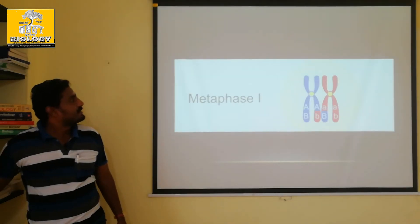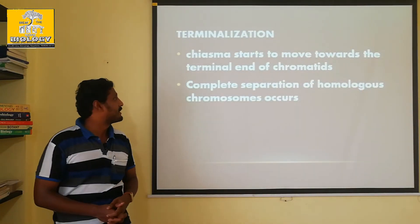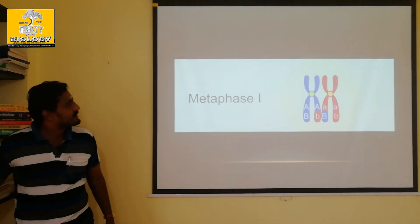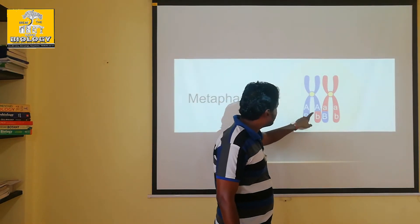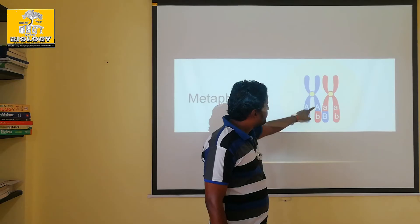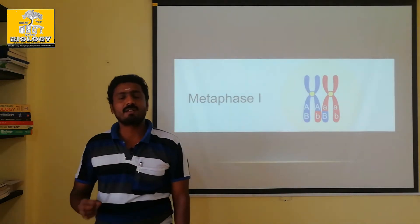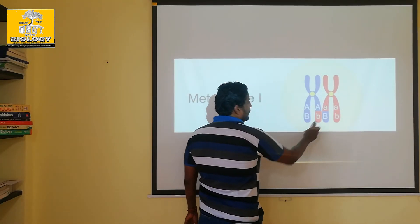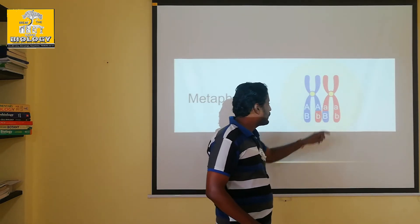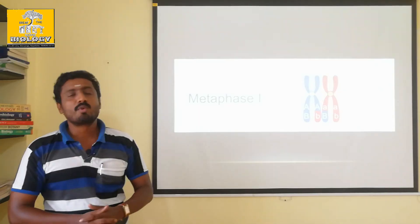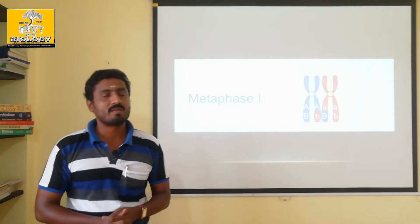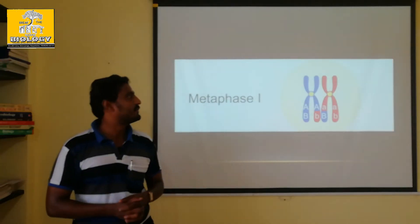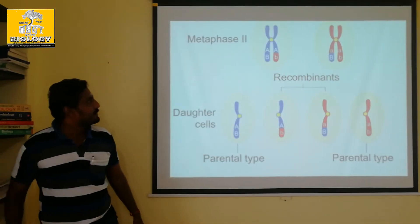The end step — terminalization. The completion of the crossing over process gives a specific structure to the chromatids. After crossing over, that is what the terminalization process is. Terminalization is the third step.